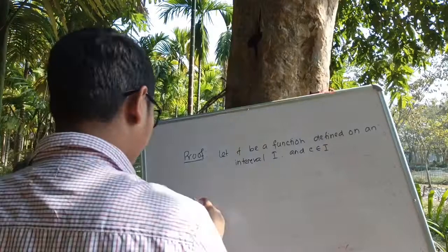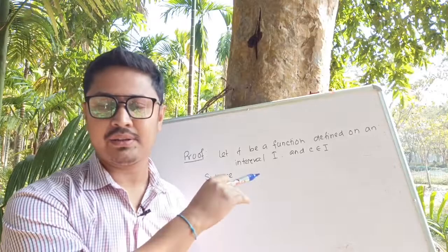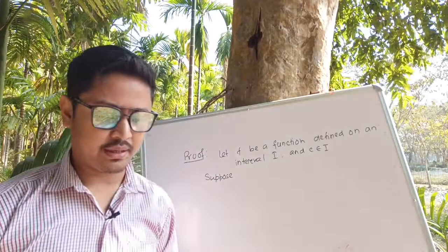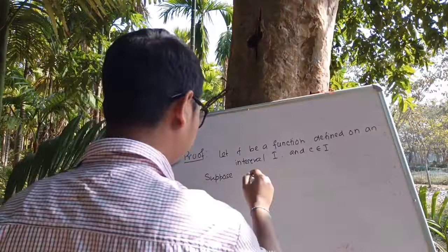Suppose the function is differentiable, then there exists a function phi which is continuous on the interval I. This function satisfies the rule: f(x) minus f(c) equals phi(c) into (x minus c). In this case phi(c) equals f'(c). Now suppose that f is differentiable at c.